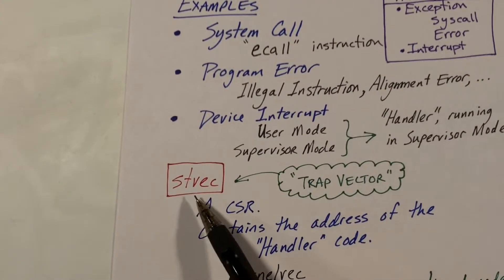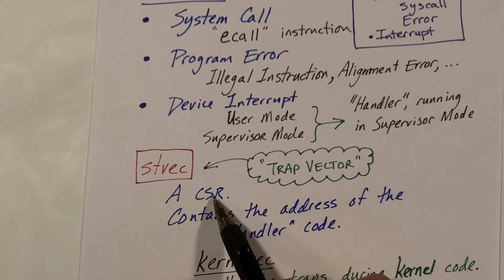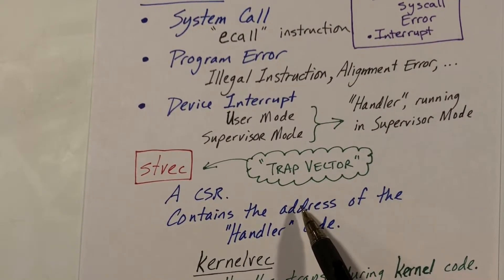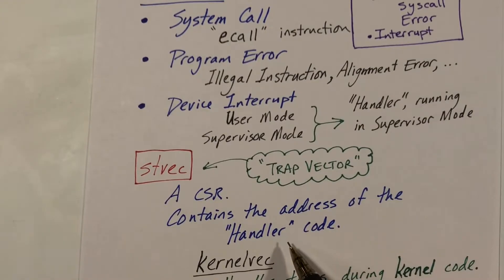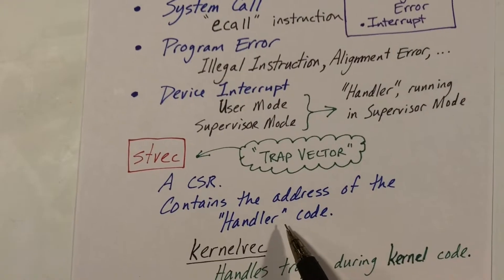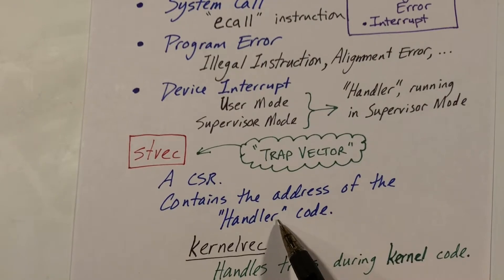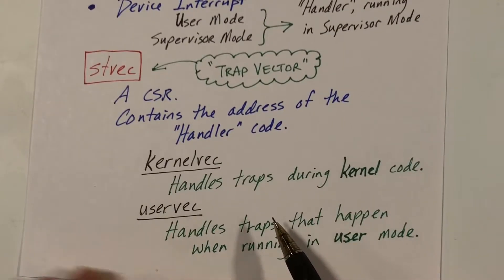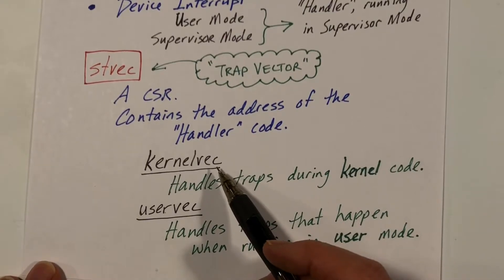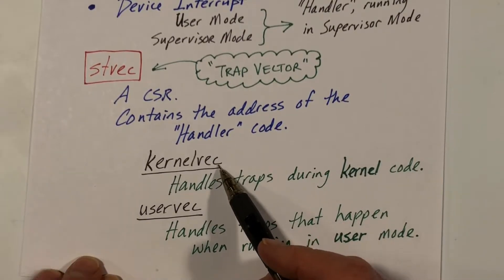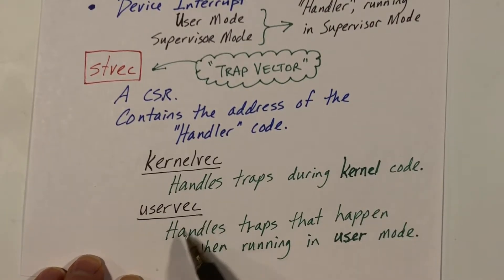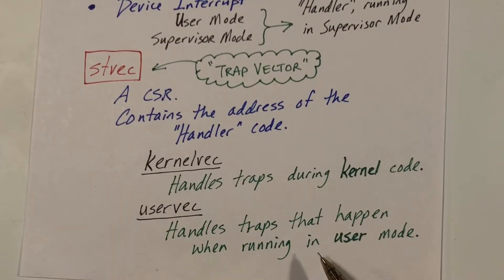STVEC is a control and status register that contains a pointer to the handler code — specifically, the address of the first instruction of code that will handle whatever trap has occurred. There are two pieces of code in XV6 that handle traps: KernelVec handles traps occurring in supervisor mode, and UserVec handles traps occurring in user mode.